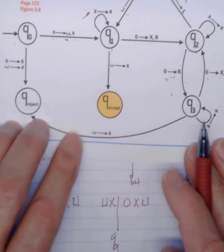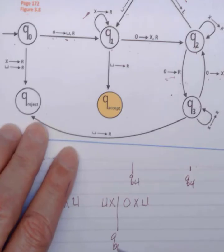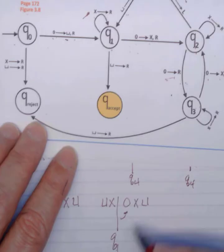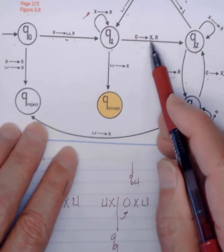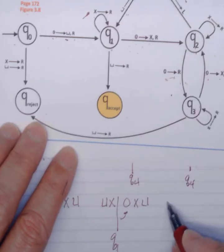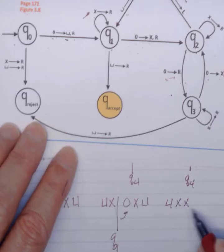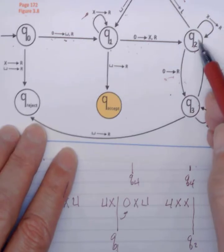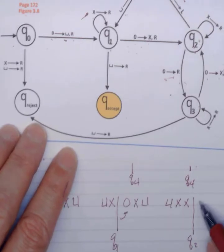And so now, do I have another transition from Q1? Yes, I do. If I see a zero, which I'm looking at a zero right here, then I convert it to an X and move right. So here's my next transition to Q2. I'm going to move to Q2. And I still have an X and a blank.